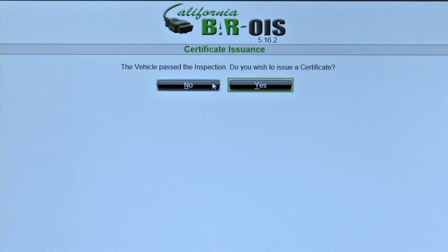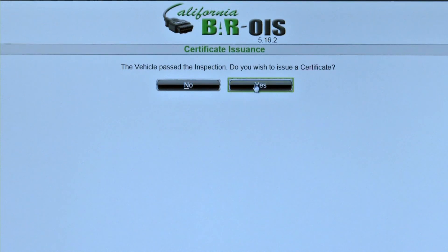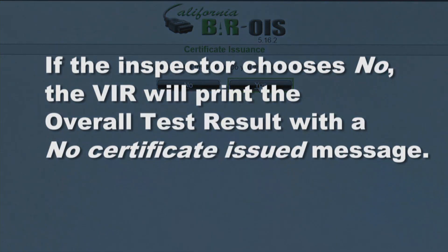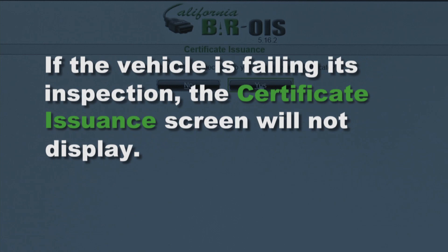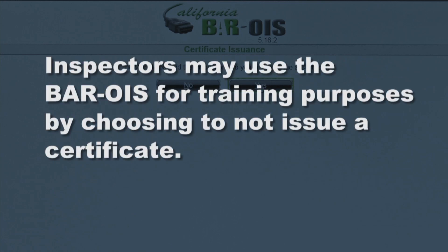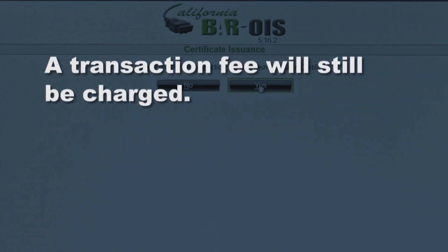If the vehicle has passed the inspection, the Certificate Issuance screen will ask the inspector if a certificate should be issued for the vehicle. Click Yes to issue a certificate. If the inspector chooses No, the VIR will print the overall test result with a No Certificate Issued message. If the vehicle is failing its inspection, the Certificate Issuance screen will not display. Inspectors may use the BAR OIS for training purposes by choosing not to issue a certificate, though a transaction fee will still be charged.